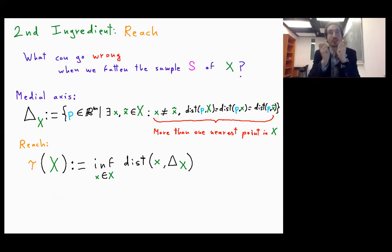So the reach is small if the medial axis is near the points of X and is big if the medial axis is far from the points of X. And this reach is the one that will measure how hard it is to sample X.